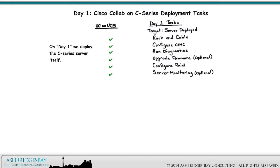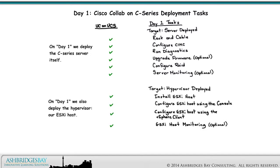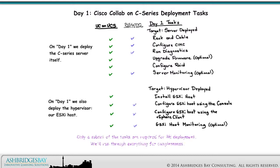Here are the Day 1 tasks for Cisco Collab on C-Series. On Day 1, we deploy the C-Series Server itself. On Day 1, we also deploy the Hypervisor, our ESXi host. Only a subset of the tasks are required for BE deployment. We'll run through everything for UC on C-Series.